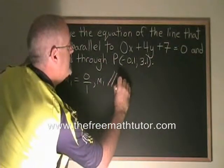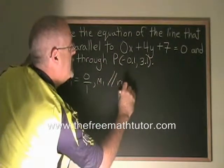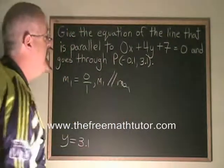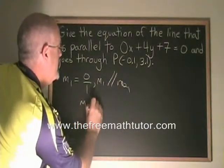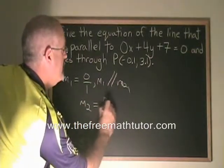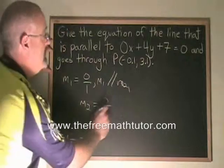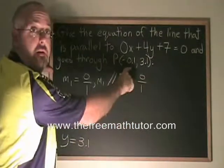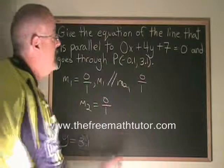M1 is equal to 0 over 1. M1 is parallel to M2. Therefore, M2 will also be equal to 0 over 1. Then I use this slope, 0 over 1, and the point that I was given to derive the equation.